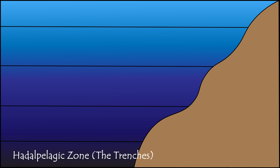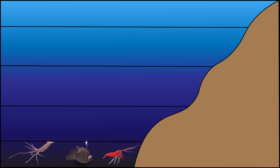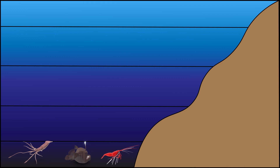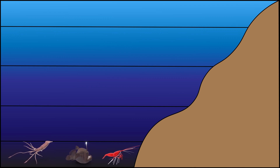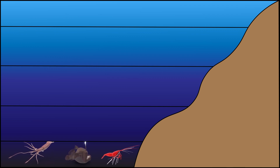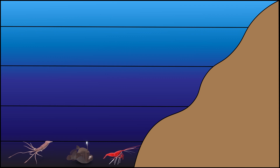The fifth layer of the ocean is called the hadopelagic zone, or the trenches — the deepest part of the ocean, starting from around 6,000 meters or 19,685 feet and reaching the ocean floor. Hadopelagic zones include deep sea trenches where some of the Earth's deepest points are located. The pressure in this zone is extremely high and only specially adapted life forms can survive here.